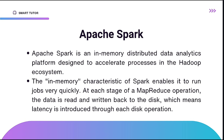Spark has many characteristics because it is able to run jobs very quickly. In one stage of the MapReduce operation, the data is read and written back to the disk. This means latency is introduced through disk I/O operations.